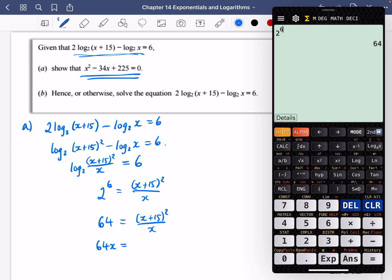So 64 equals (x+15)² over x. In other words, 64x equals, I'm now going to do the expansion of x plus 15 squared. It's going to be x² plus 30x plus 15 squared, which is 225. And I'm going to make it all equal 0. So I'm going to do my 30 minus 64, minus 34x plus 225. Ah, here we go. We've ended up with exactly the equation that they asked for.